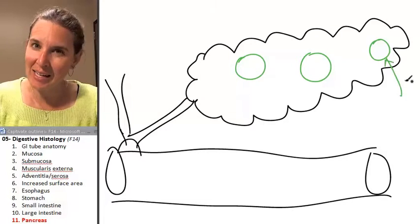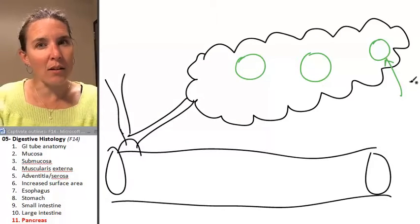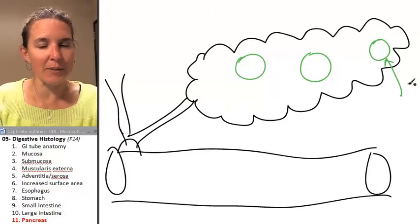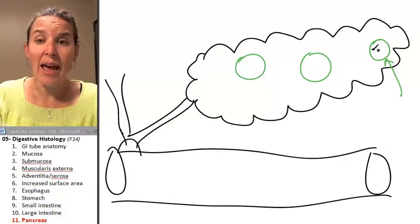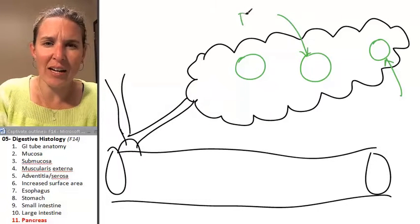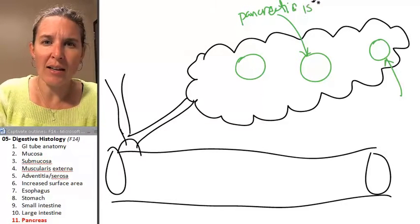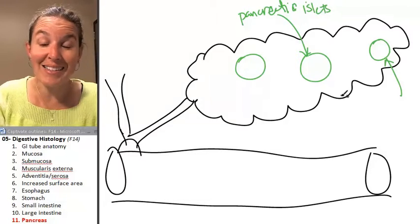Depending on the stain, they might look super different or they might look kind of similar but slightly different. They're made of cells, and these are called islets of Langerhans or pancreatic islets. They're like little islands in the pancreas.